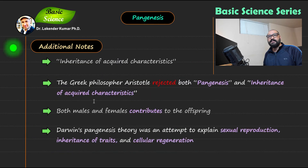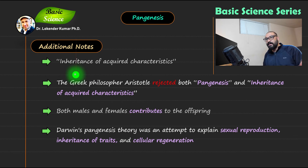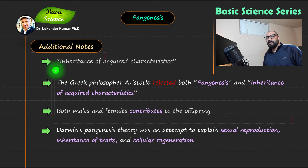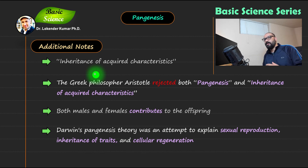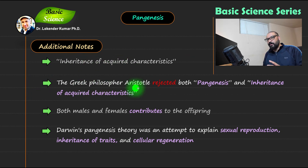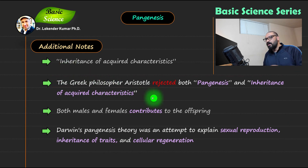Additional points: first, the concept of inheritance of acquired characters emerged from the theory of pangenesis. This means that when someone acquires a certain characteristic — for example, the ability to play an instrument — that character would be transmitted to the next generation.